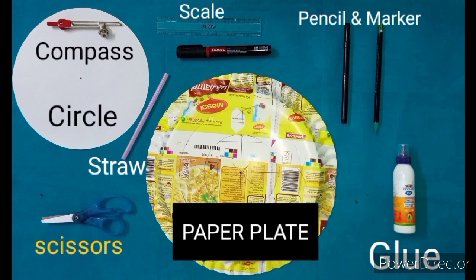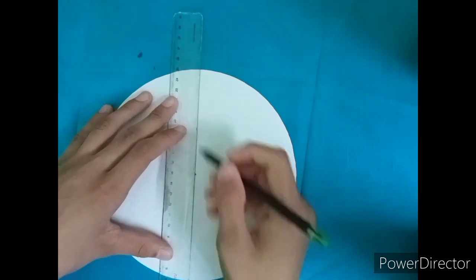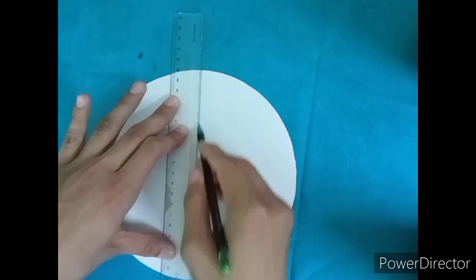compass, scale, marker and pencil, and glue. In the first step we have to mark the lines on the cutout of the circle.